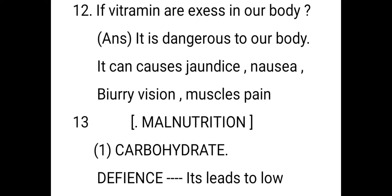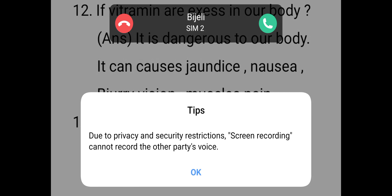If vitamins are in excess in the body, it is also dangerous. Excess vitamins can cause jaundice, nausea, blurred vision, and muscle pain. Jaundice is mainly caused by the buildup of bilirubin in the blood — it is a pale yellow color — occurring when the liver cannot sufficiently process bilirubin. Normally, red blood cells break down and bilirubin passes to the liver.